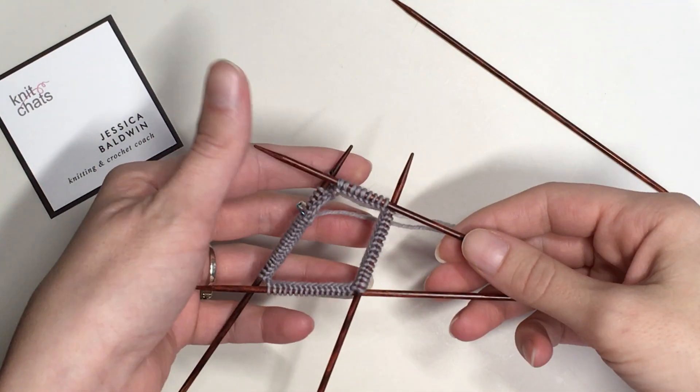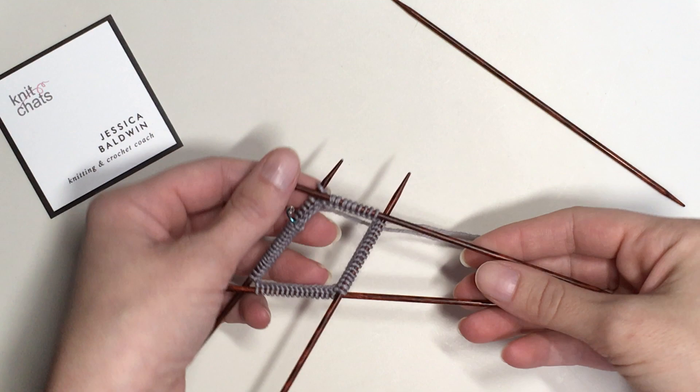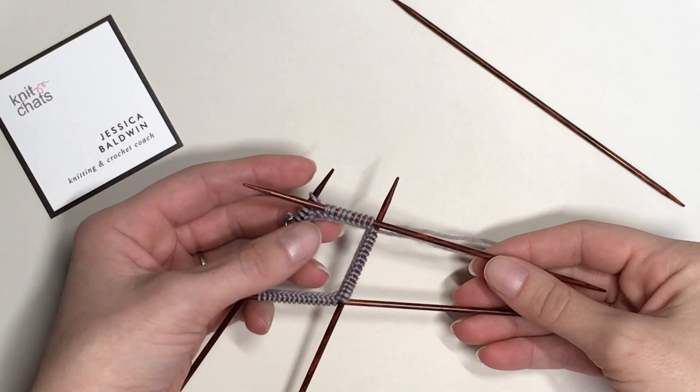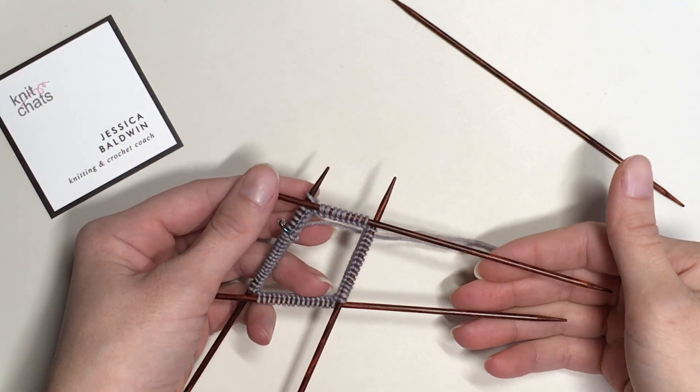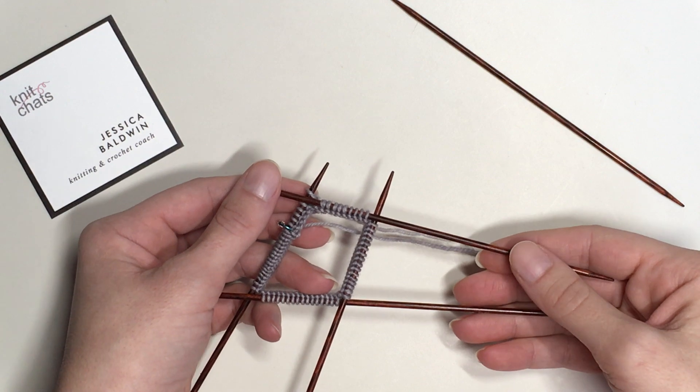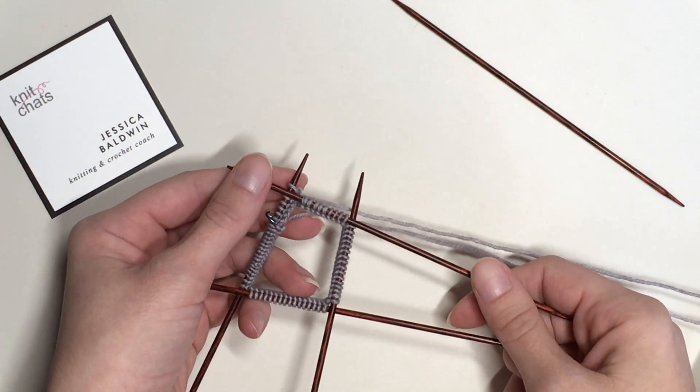Now that we have joined in the round on double points, both right then left handed, I'm going to go ahead and we're going to switch to circular needles.